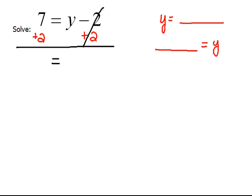So now if we look at our new equation, we have on the left side 7 plus 2, which is 9. And on the right-hand side, our minus 2 plus 2, those cancel out, so we just have y. 9 is equal to y.